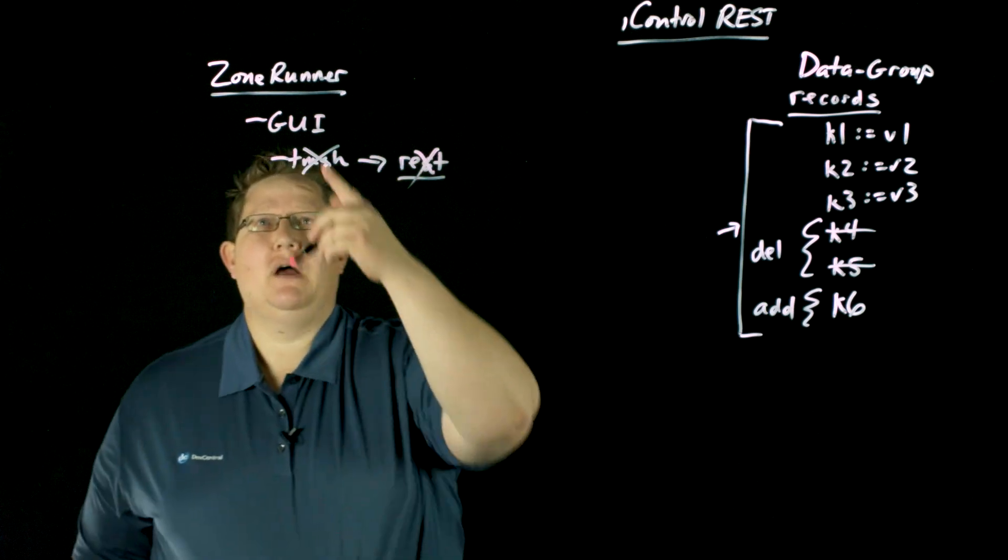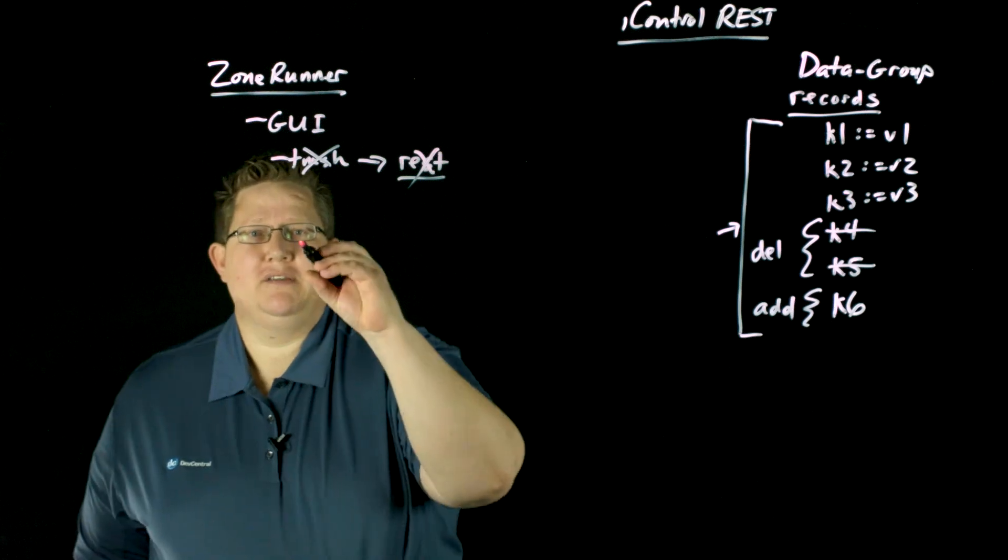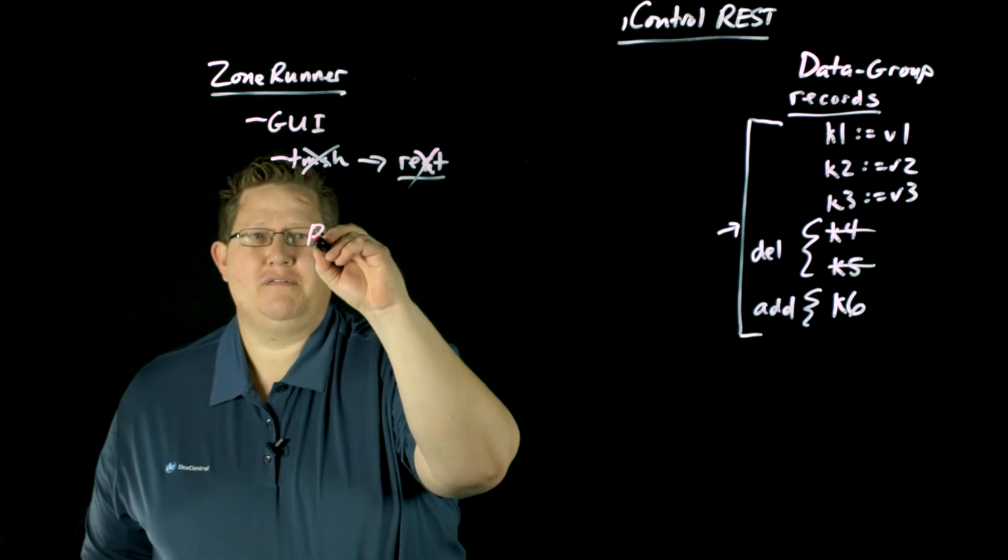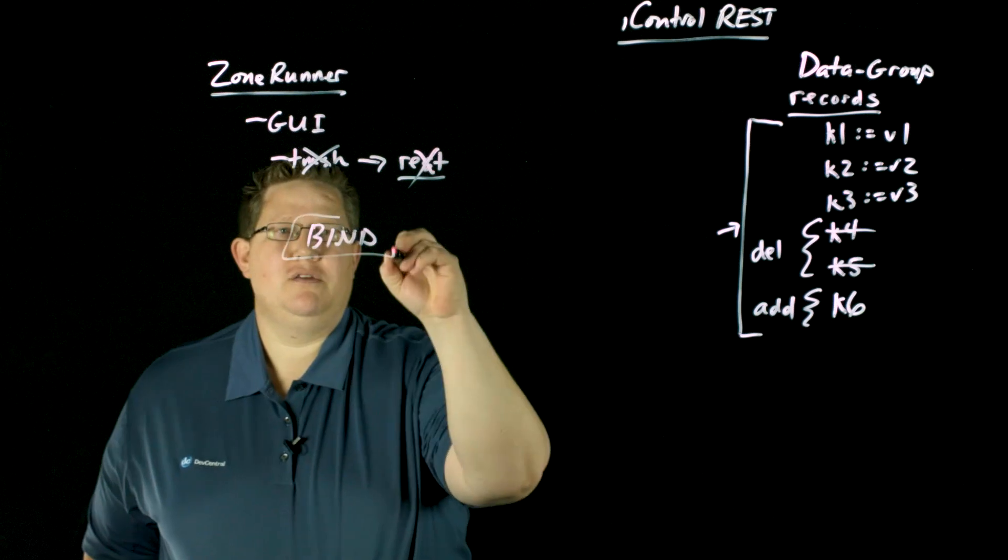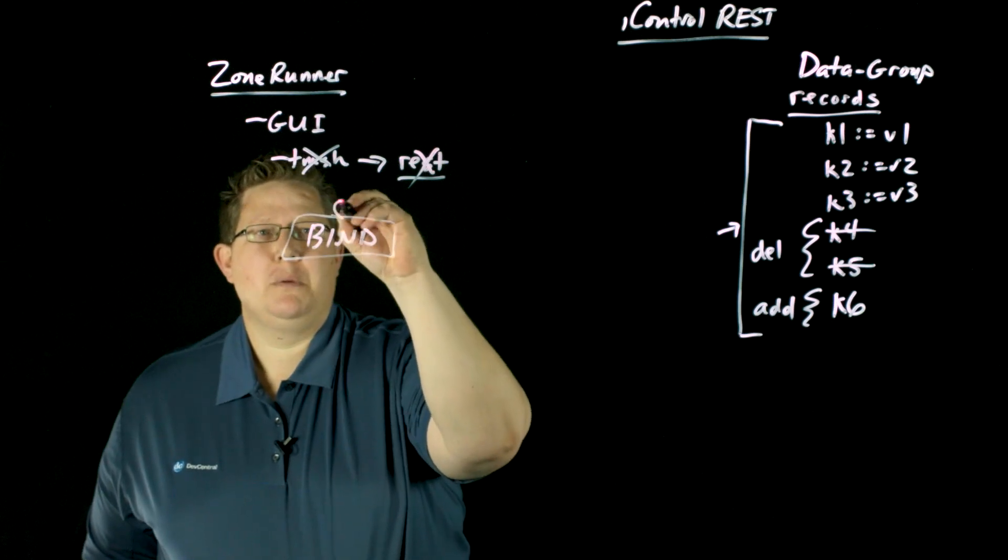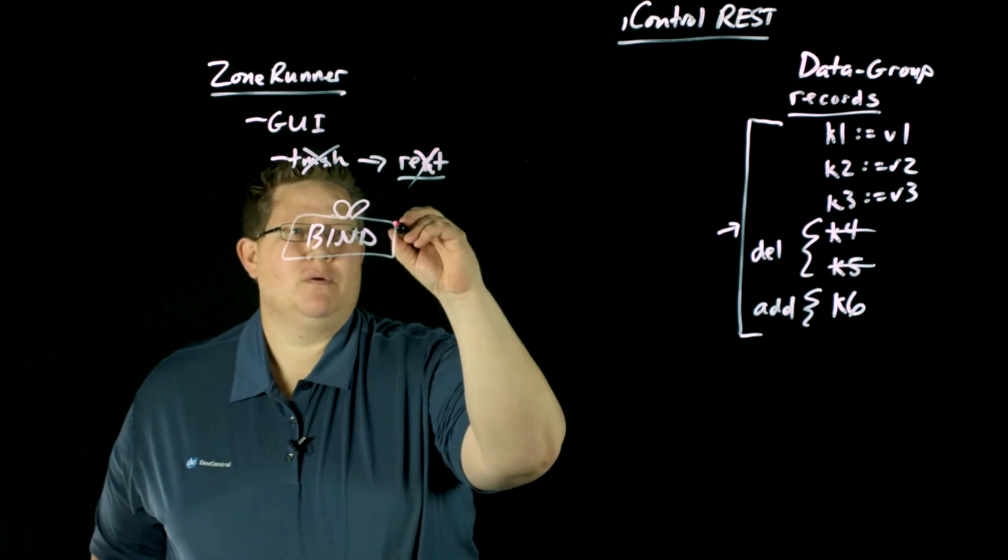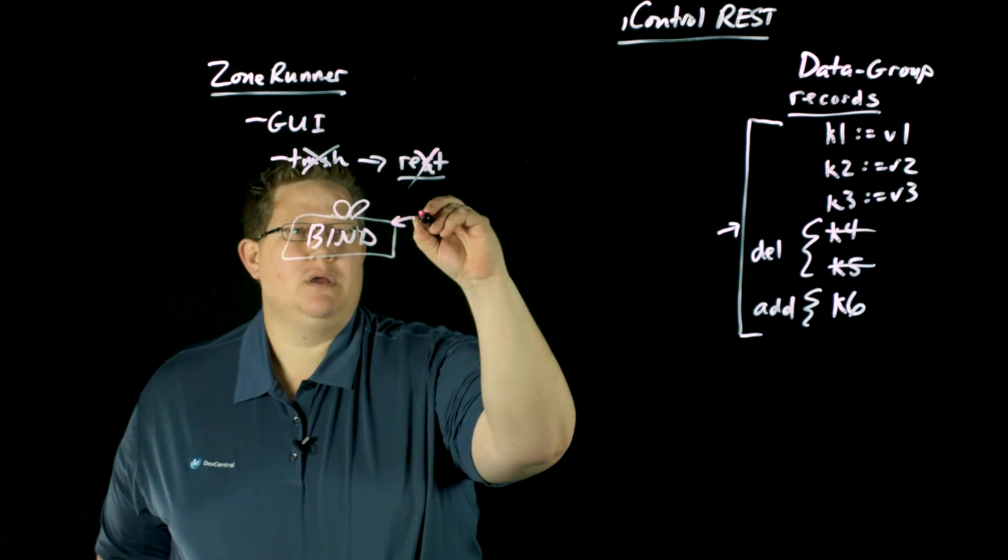Well, you do have options. ZoneRunner, ultimately, it's just a wrapper for bind. So you have bind, and then you have this nice little present wrapper that we'll call ZoneRunner.